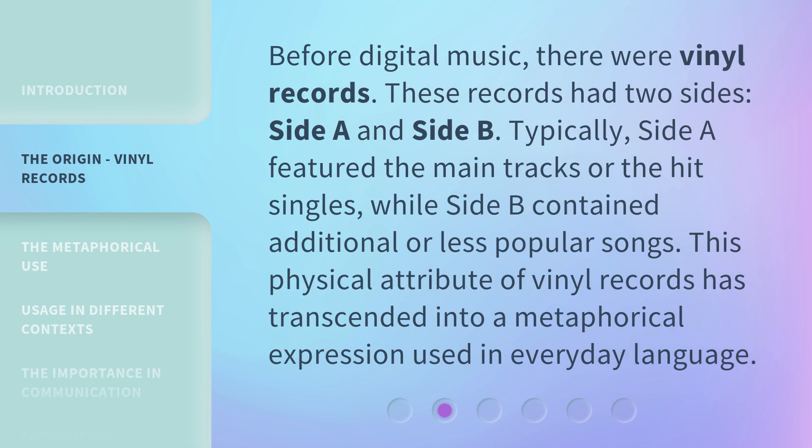Before digital music, there were vinyl records. These records had two sides — Side A and Side B typically. Side A featured the main tracks or the hit singles, while Side B contained additional or less popular songs. This physical attribute of vinyl records has transcended into a metaphorical expression used in everyday language.